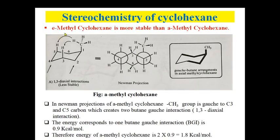Equatorial methyl cyclohexane is more stable than axial methyl cyclohexane. Let's see why. In axial methyl cyclohexane, looking at the Newman projection from this side, carbon 2 and carbon 4 are the front carbons, and carbon 1 and carbon 5 are the rear carbons. The methyl group creates 1,3-diaxial interactions — hydrogens are present at carbon 3 and carbon 5, so this is called a 1,3-diaxial interaction.